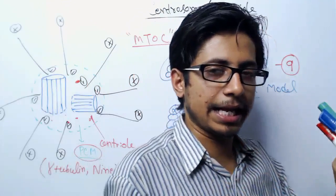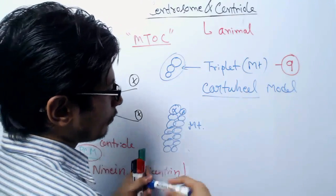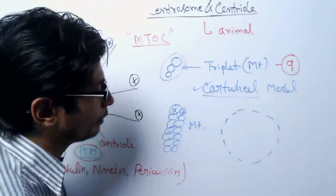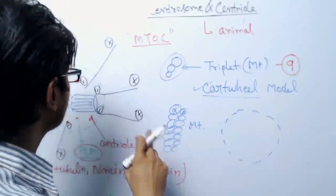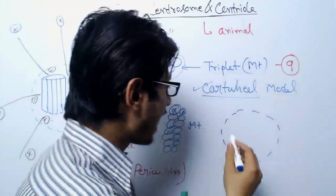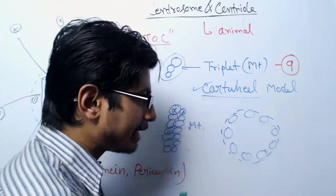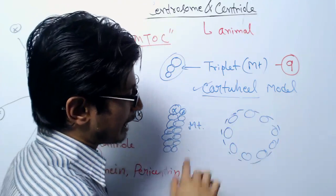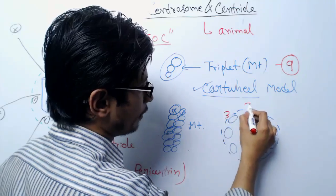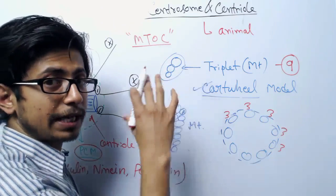Looking deeper at the centriole structure: the two barrels are present at 90 degrees and are described by the cartwheel model. In cross-section, there are nine microtubules arranged in this barrel, each consisting of three tubulins — called triplets. So there are nine such microtubule triplets arranged around the barrel.